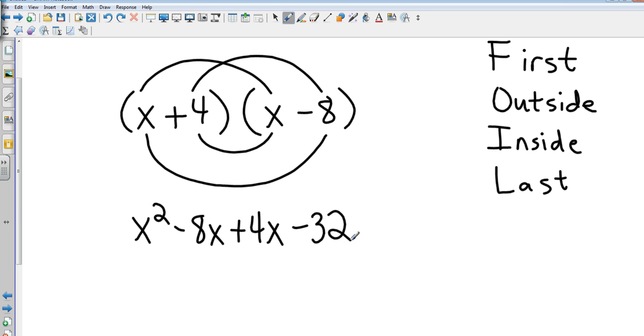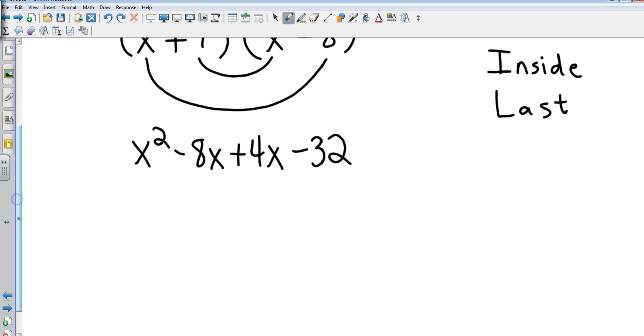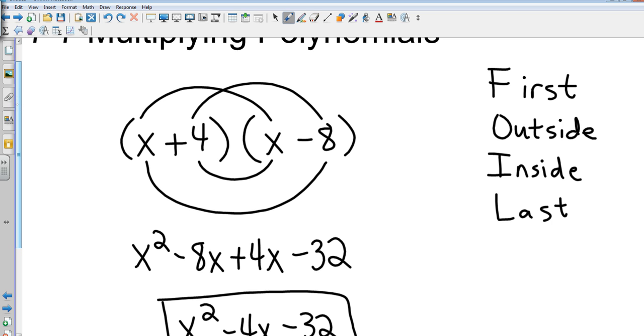Now what we want to do is we want to combine the like terms, and so I end up with x², then negative 8x plus 4x is negative 4x, and then minus 32. So there is my final answer.